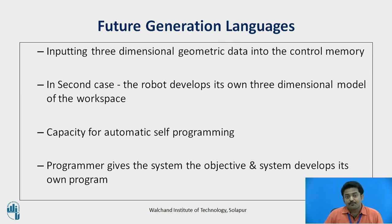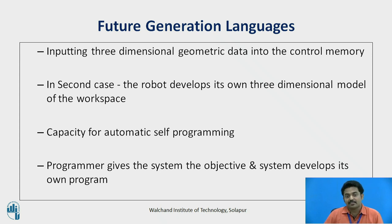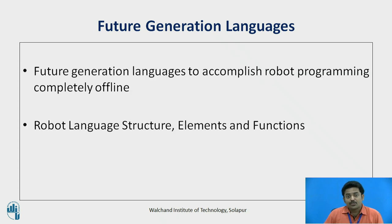The world model might be generated either by inputting three-dimensional geometric data into control memory, or by providing the robot with the capacity to see the work environment and properly interpret what it sees, in which case the robot develops its own three-dimensional model of the workplace. The second ingredient is the capacity for automatic self-programming, where the system is given an objective and develops its own program of actions required to accomplish it. With future generation languages, it should be possible to accomplish robot programming completely offline without requiring a teach pendant to physically show each point in the program.